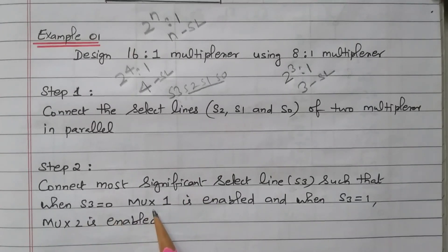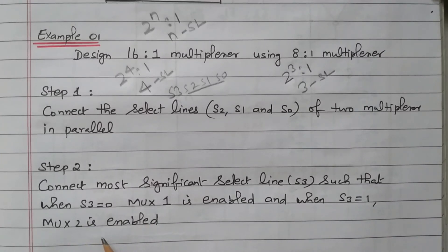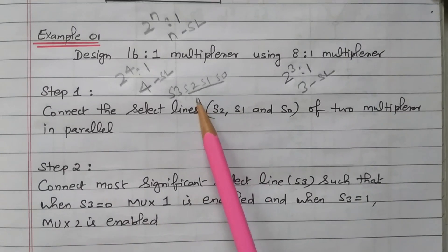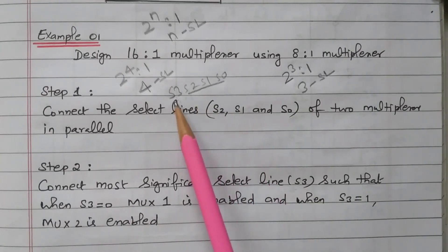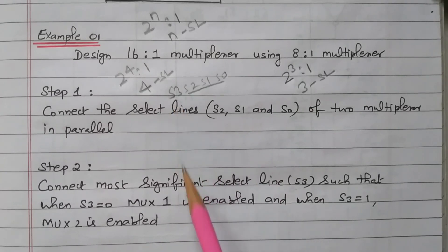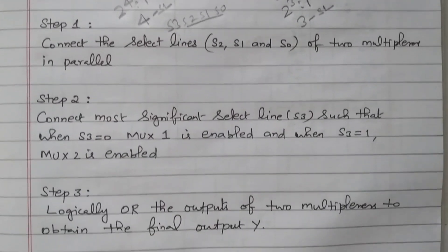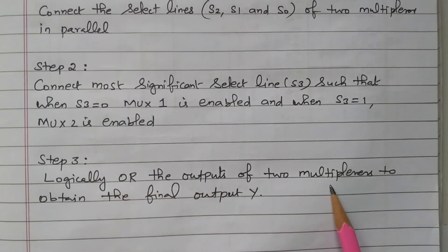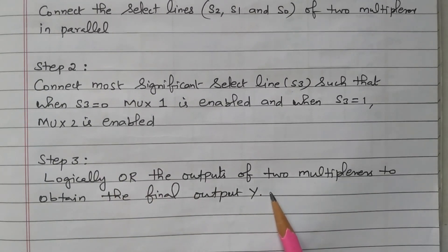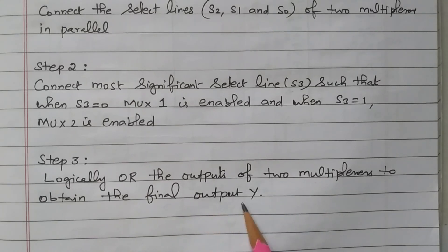S3 equal to 0 means MUX1 will be enabled; S3 equal to 1 means MUX2 will be enabled. The first 3 selection lines are connected in parallel to both multiplexers. The fourth one, the MSB selection line, is used to select MUX1 and MUX2. Step 3: logically OR the outputs of the two multiplexers to obtain the final output Y. One OR gate is used, with outputs of MUX1 and MUX2 connected to it to get the final output.